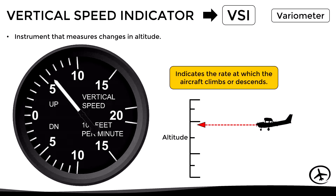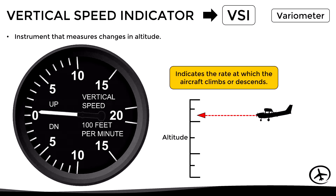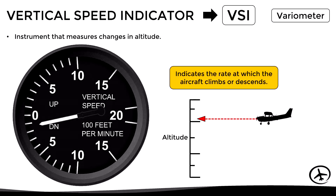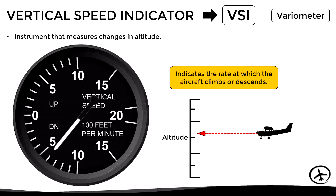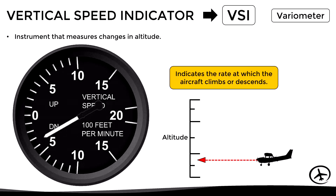Looking at this instrument, the pilot can tell if the aircraft is in level flight, climbing, or descending, and how fast the altitude is changing. Usually this rate of climb or descent is expressed in feet per minute.